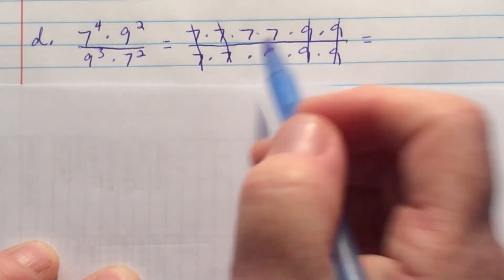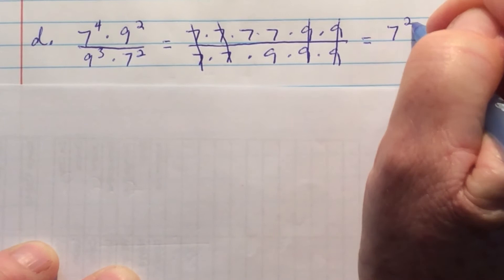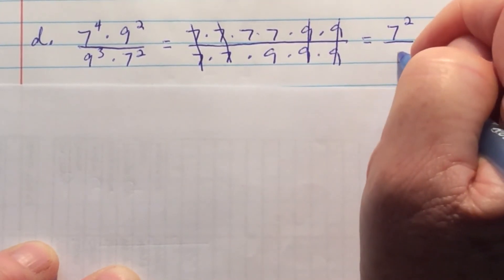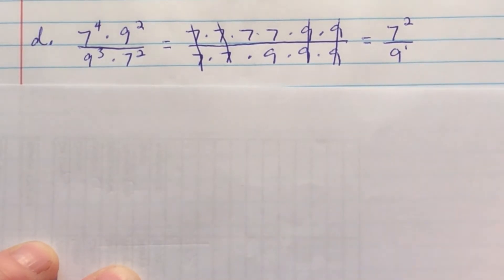So what I have left is 7 times 7, which is 7 squared, and a single one on the bottom, which is 9, or 9 to the first power.